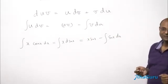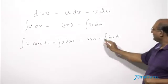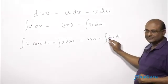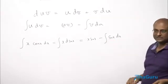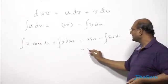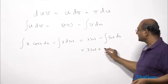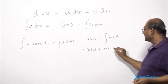Now, sin X DX, of course, you know is minus cos X. Or if I put a minus and take that minus inside, minus sin X will give me cos X. So therefore, the answer is X sin X plus cos X plus a constant C.